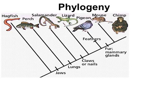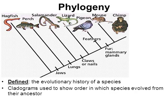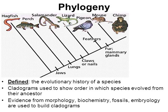This brings us to the area of taxonomy known as phylogeny — where we study the evolutionary history of a species. The picture here is a tool called a cladogram, used to show the order in which we think species evolved from their ancestors. In this picture, a hagfish evolved first, then a perch, a salamander, a lizard, a pigeon, a mouse, then a chimp. When discussing how to read cladograms, we use evidence from all those topics — morphology, biochemistry, fossils, and embryology — to trace the evolutionary history of a species.